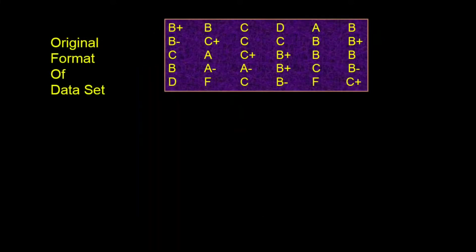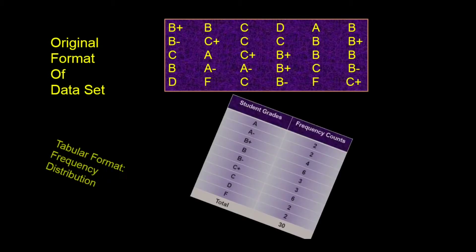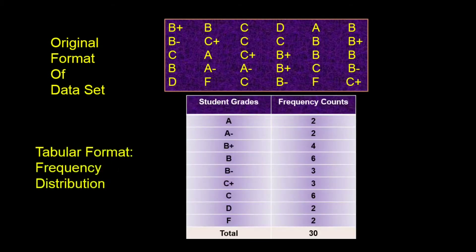Let's compare the original data set with this frequency table. Here we have the original data, and here is the data summarized in a frequency table. You can see how much easier it is to understand the data when it is presented in a tabular format than just a listing of the grades.